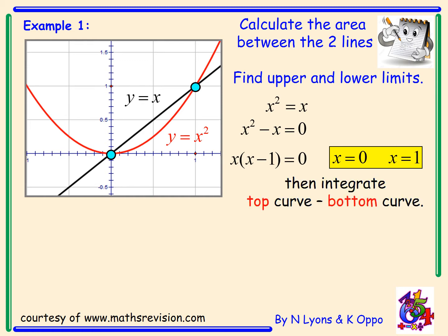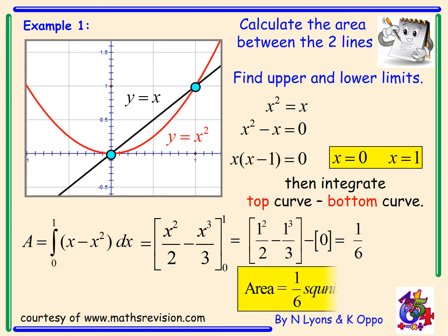We then have to integrate top curve minus bottom curve. So we've got the integral from 0 to 1 of x minus x squared. Integrating that, I've got half x squared minus a third x cubed from x is 0 to x is 1. Sub in your limits and evaluate, and that gives me the answer: area equals a sixth square units.